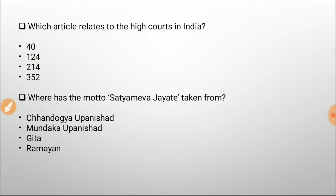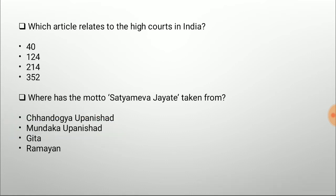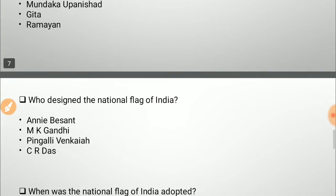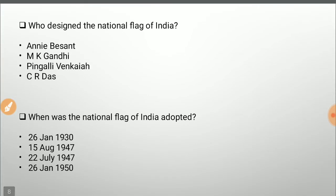Where has the motto 'Satyamev Jayate' been taken from? Options are Chandogya Upanishad, Mundaka Upanishad, Gita, and Ramayana. The correct answer is the Mundaka Upanishad — 'Satyamev Jayate' has been taken from the Mundaka Upanishad.